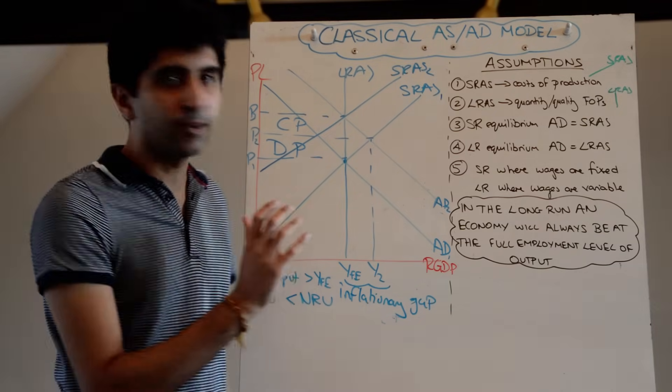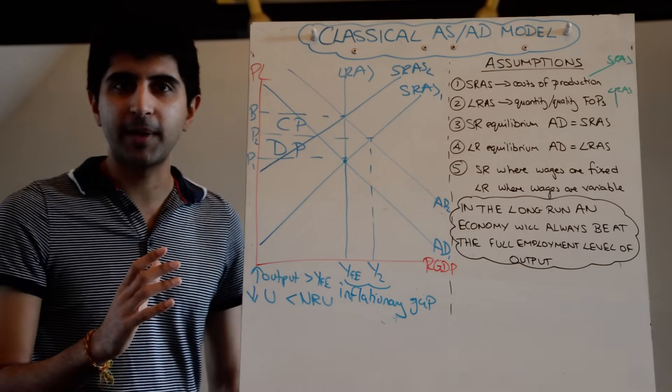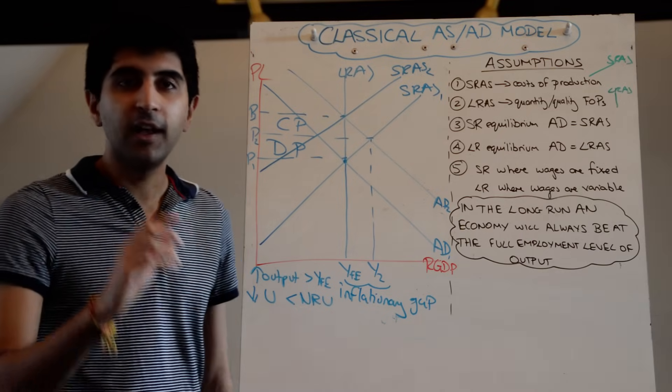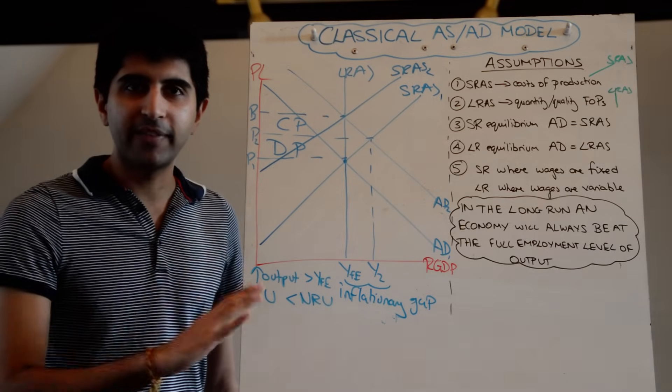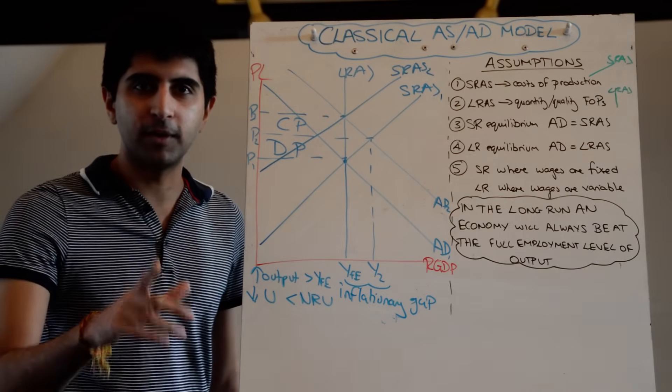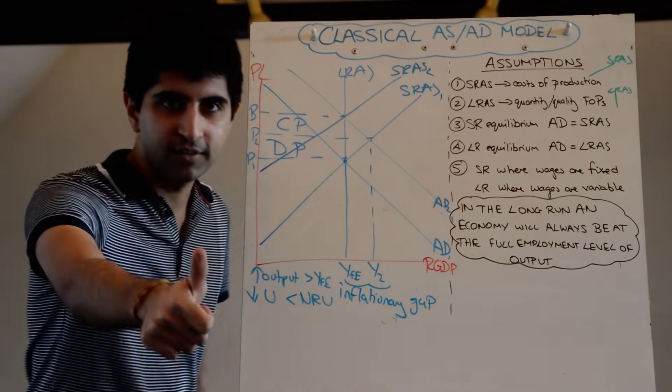So that's the classical model of aggregate demand and aggregate supply. In the next video, we'll compare that to the Keynesian model.